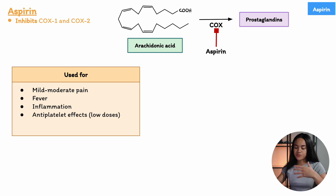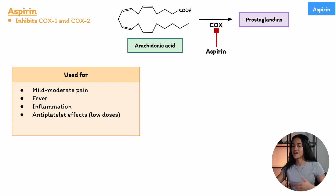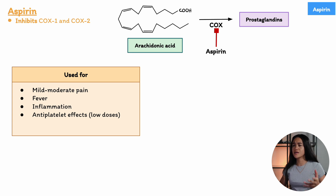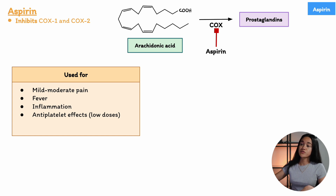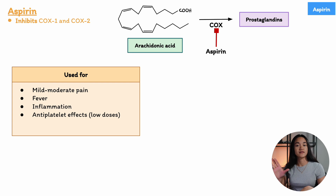At low doses, aspirin is often used as a prophylactic drug due to its antiplatelet effects, helping to prevent heart attacks and strokes. It's important to note that when patients are being treated with aspirin to inhibit platelet activation, the doses used are much lower than those used for its anti-inflammatory or pain-relieving effects.